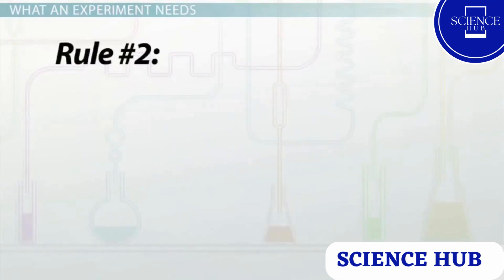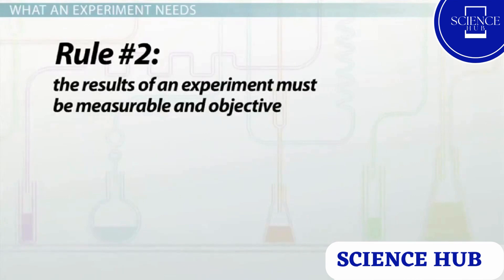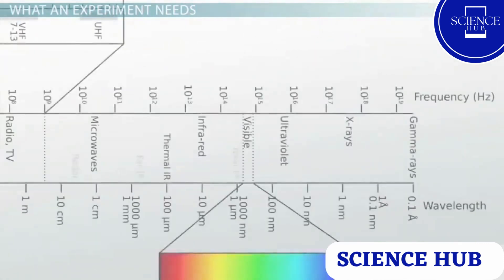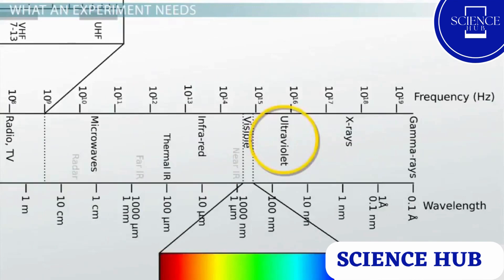The second rule is that the results of an experiment must be measurable and objective. Scientists use standard units to measure different properties like length, time, volume, mass, and speed. Sometimes we need special equipment to observe things in a measurable way. For example, we can't see ultraviolet light or hear infrasonic sounds. We need special devices to detect and measure those properties for us.